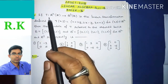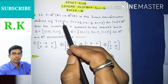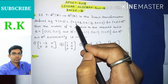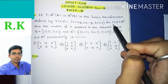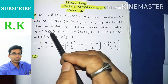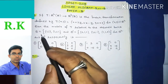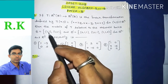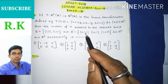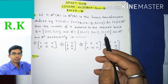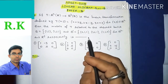The question is: if T is a mapping from R² to R³ is the linear transformation defined by T(x, y) = (x + 2y, 2x − y, 3x + y) for (x, y) belonging to R², then the matrix of T relative to the ordered basis B = {(1,1), (1,2)} and B' = {(0,1,1), (1,0,1), (1,1,0)} for R² and R³ respectively is?